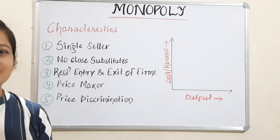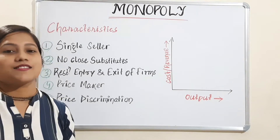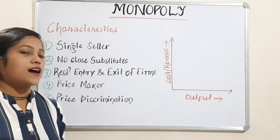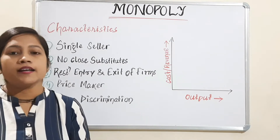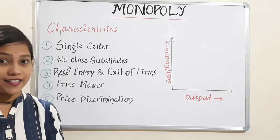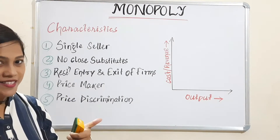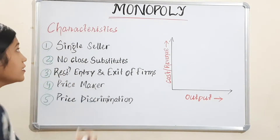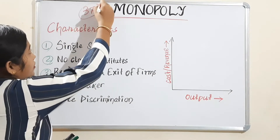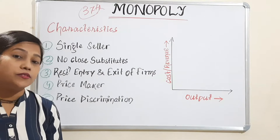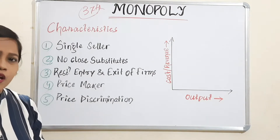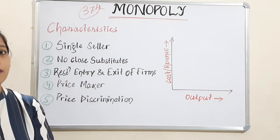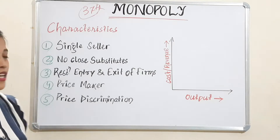Hey guys, you are here with my channel Economics at a Glance. As all of you know, the perfect competitive market topic is over. Today we will start the next market, that is imperfect market, and the first one coming in imperfect market is monopoly market. This is the 37th lecture, meaning we have already covered 36 lectures in microeconomics. If you have not visited those videos, you can access them through the playlist mentioned in the description box.